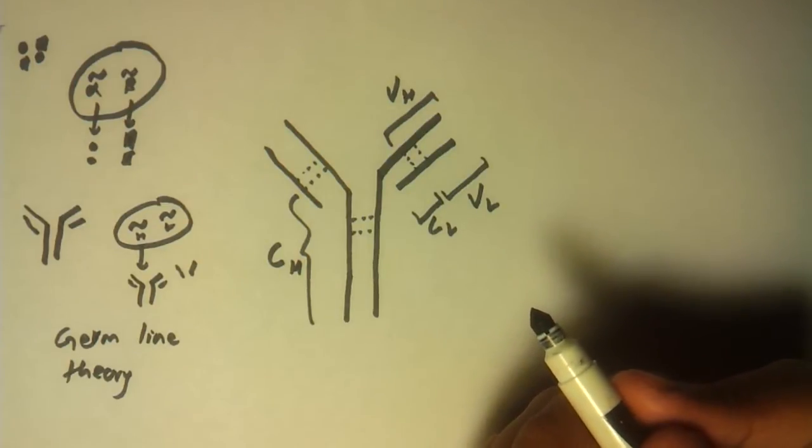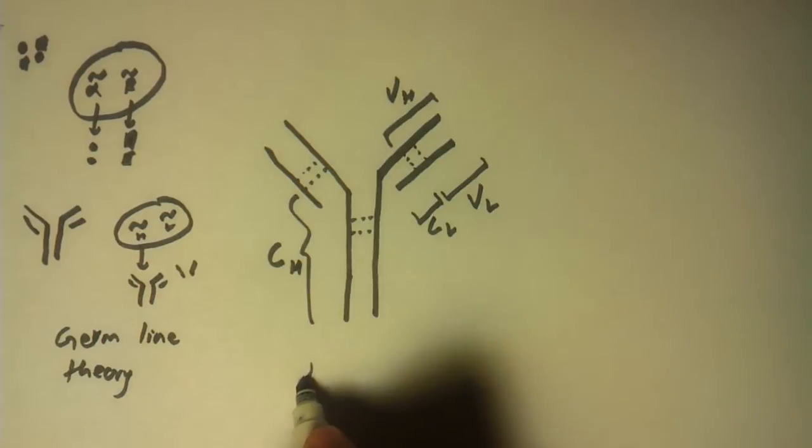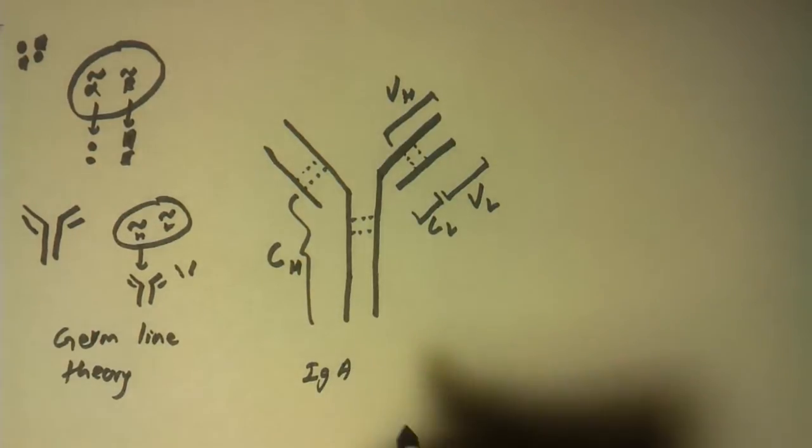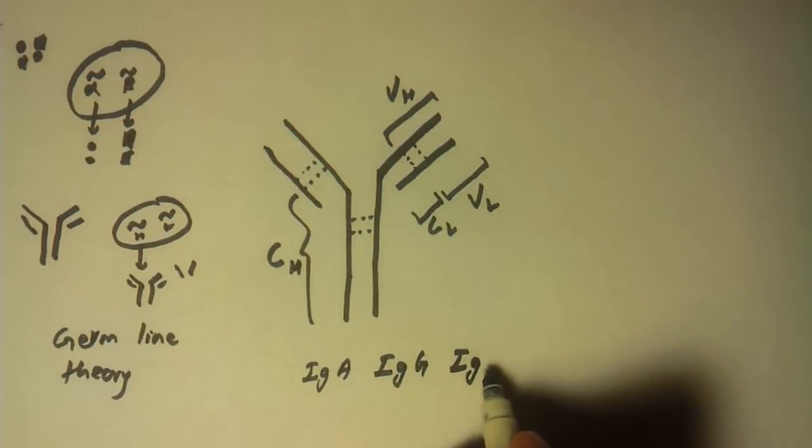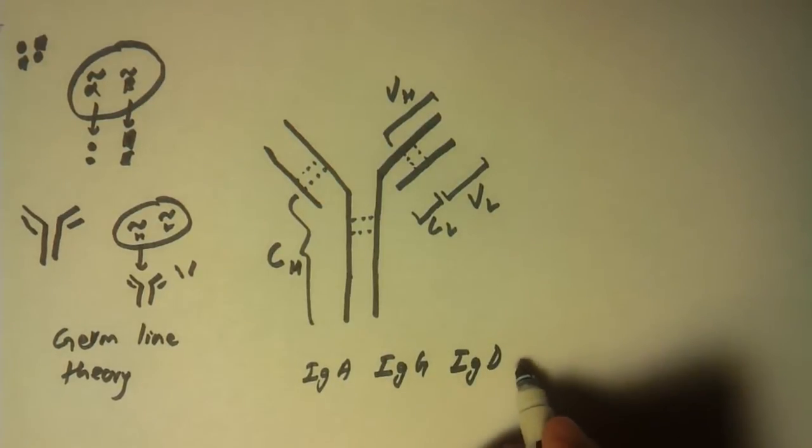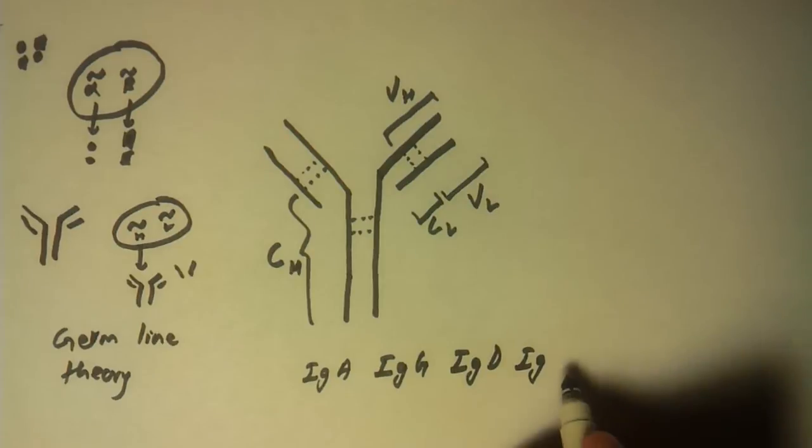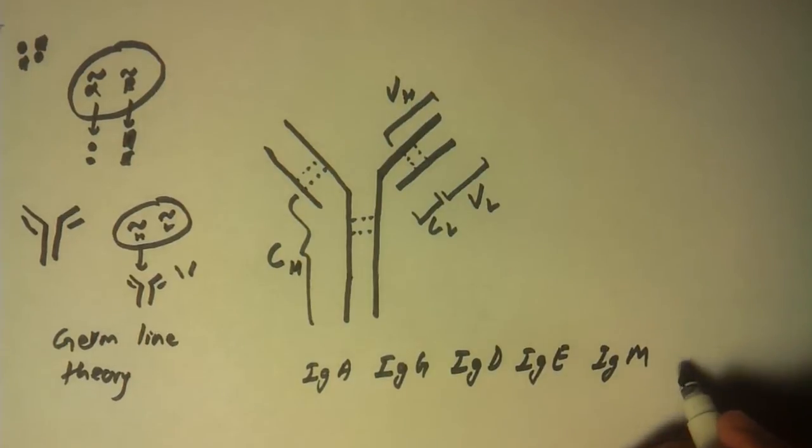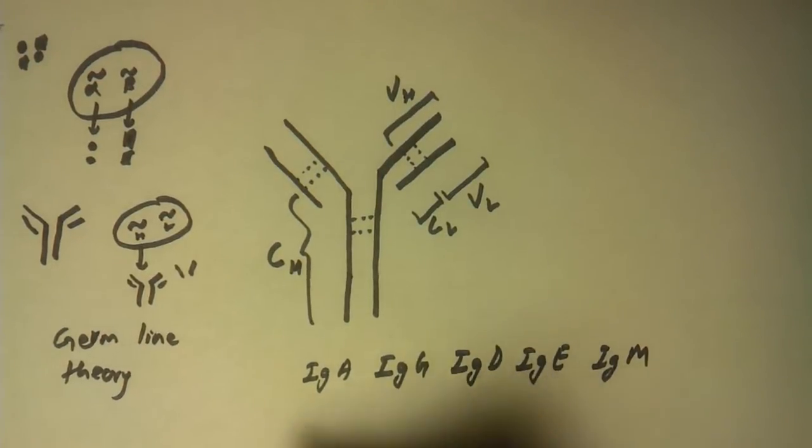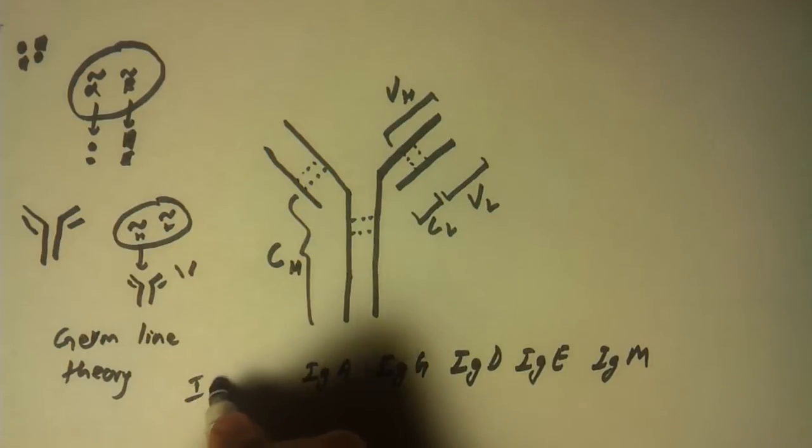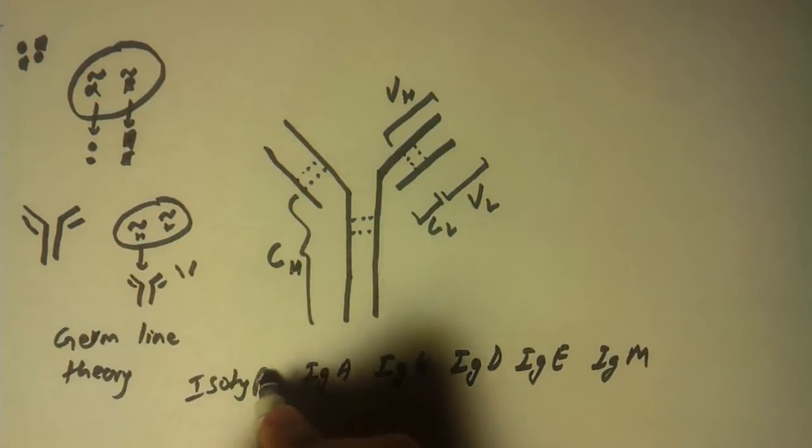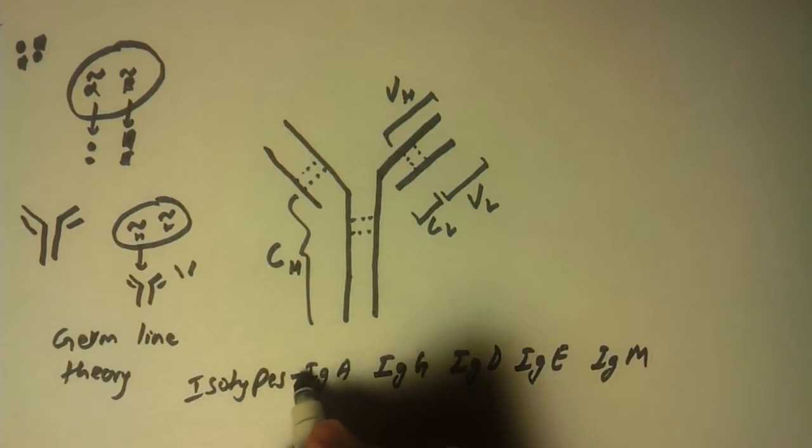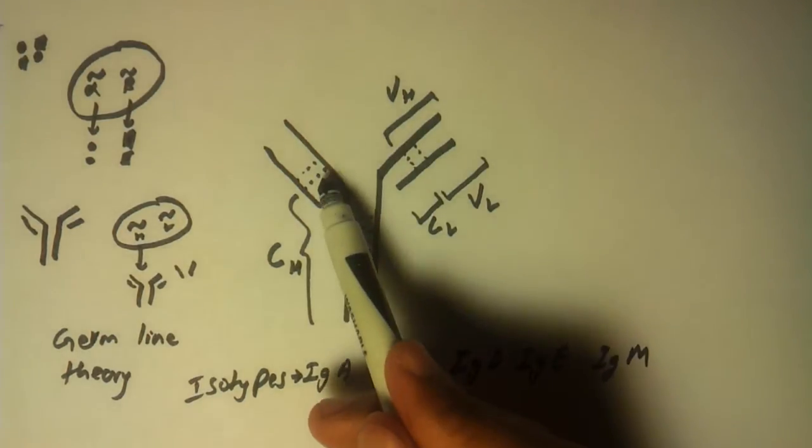Antibodies are divided into five different types. These different types of antibodies are also called isotypes.